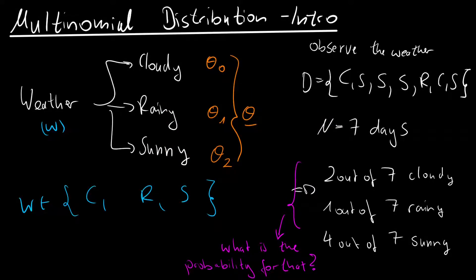Hi, welcome to this video. The agenda is that I will first give an intuition for a multinomial distribution, then we will derive the probability mass function, and in the end we will look at how this is implemented in TensorFlow Probability.